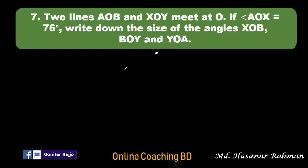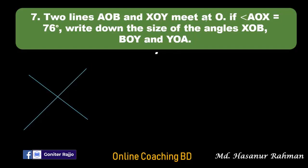Now number seven: two lines AOB and XOY meet at O. The value of angle AOX is 76 degrees. We need to write down the size of angles XOB, BOY and YOA. Since AOB is a straight line, it is a straight angle equal to 180 degrees. So XOB is supplementary to AOX, meaning angle XOB equals 180 degrees minus 76 degrees, which is 104 degrees.